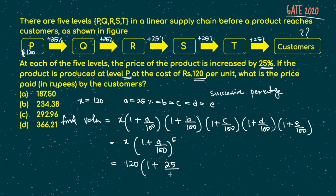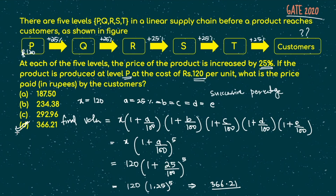Since all values are equal to 25, we can simplify this to 120 times (1.25) to the power 5. If you solve this — and in the GATE exam you can use a calculator — you get 366.21, which is option D. That's the answer. The usual method would be to calculate 25% of 120, add it, then repeat five times, but this trick gets the answer in one simple step.